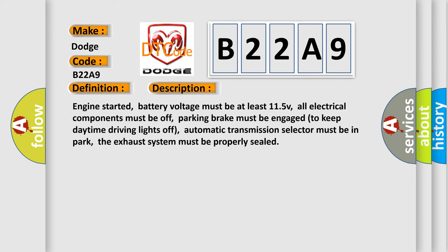Engine started. Battery voltage must be at least 11.5 V. All electrical components must be off. Parking brake must be engaged to keep daytime driving lights off. Automatic transmission selector must be in park. The exhaust system must be properly sealed.